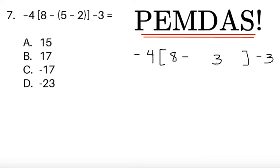So, 8 minus 3, that's 5. So, we can replace 8 minus 3 here by 5. Negative 4 times 5, that gives me negative 20. So, just simply negative 20 minus 3, and that's equal to negative 23. So, choice D it is.